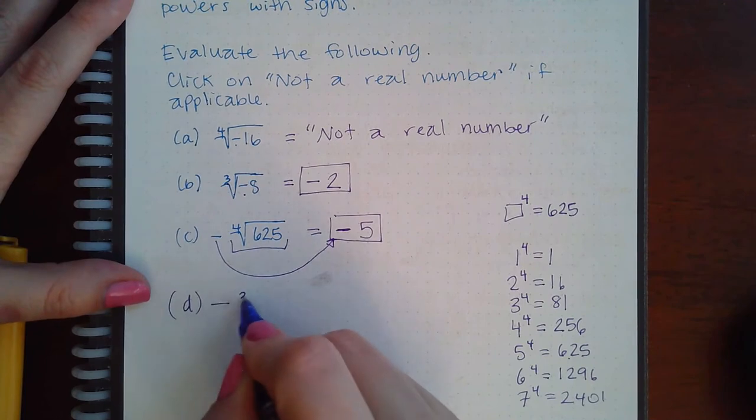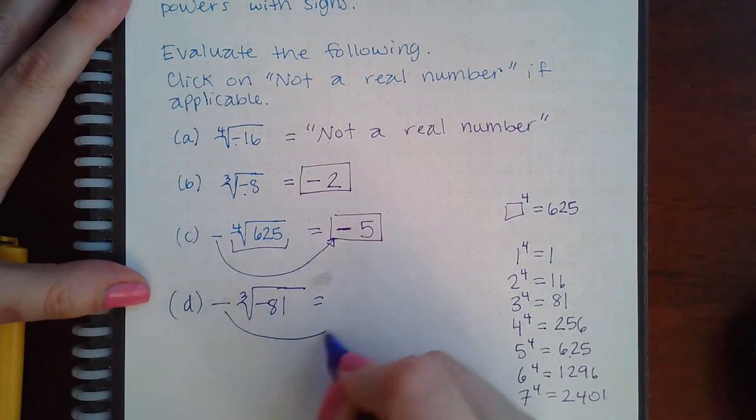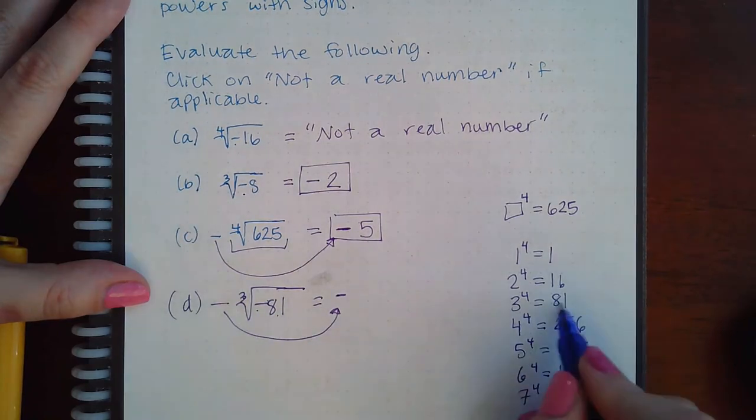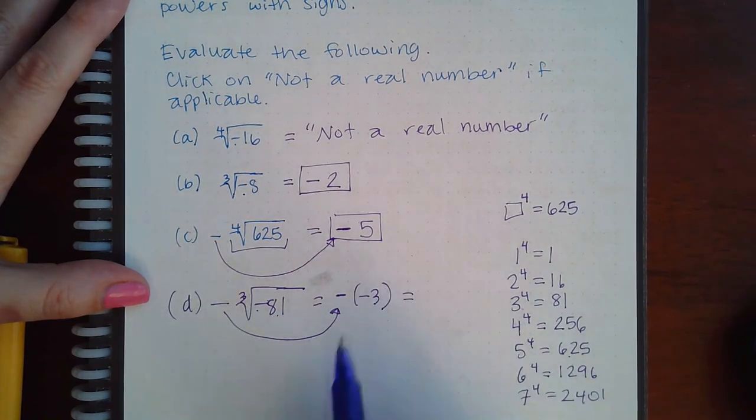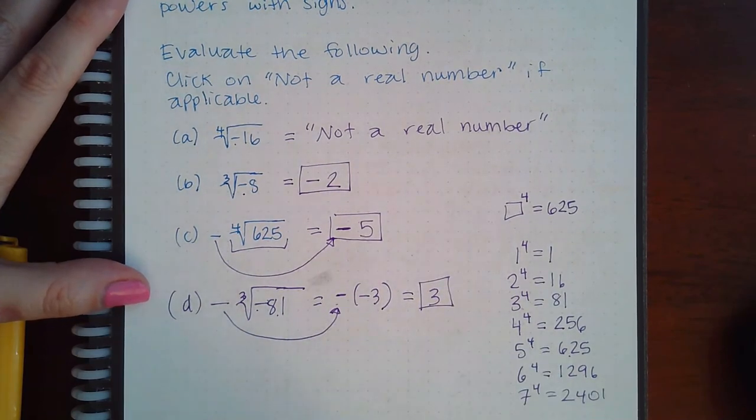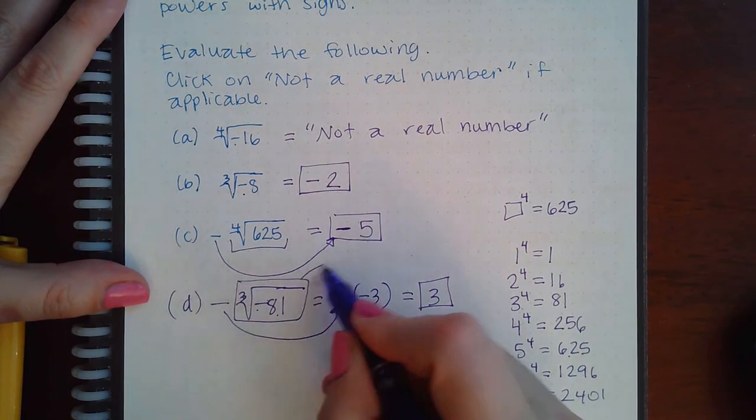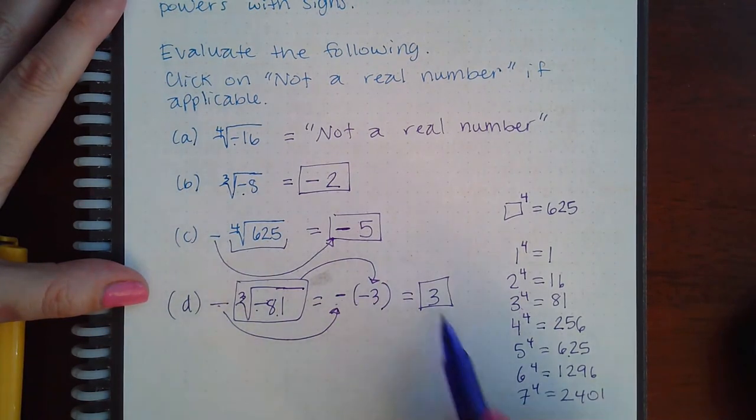This negative will come over, and then the cube root of negative 81 is going to be negative 3. But you got a negative and a negative, so the result actually turns out to be positive in the end. This gave me negative 3, and this negative is just out in the front, and that negative and negative turn into a positive.